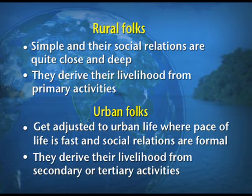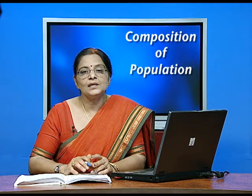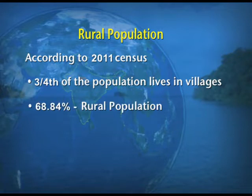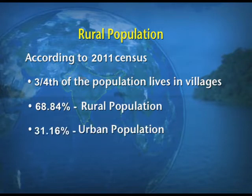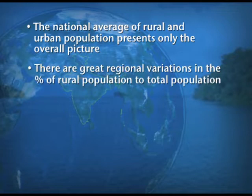Rural population in India is dominant because India is primarily a country of villages, and three-fourths of the population lives in villages. According to 2011 census, 68 percent is the rural population whereas only 31 percent is the urban population. The national average presents only the overall picture, and there are great regional variations in the percentage of rural population to the total population.